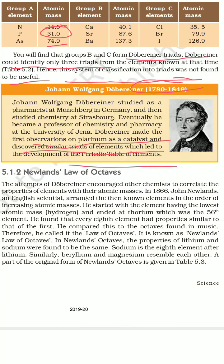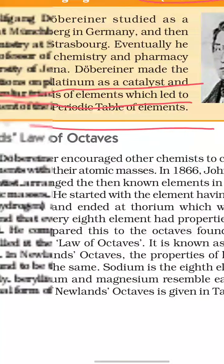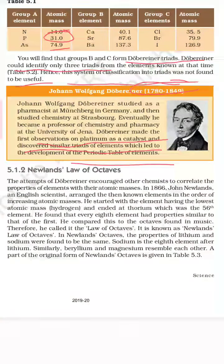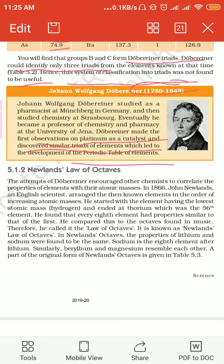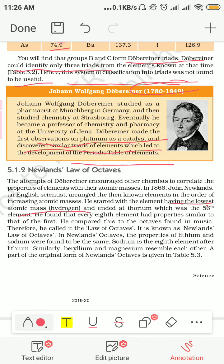Next scientist के बारे में हम पढ़ेंगे — वो हैं Newland. Newland ने एक law present किया और उसको नाम दिया 'Law of Octaves'. John Newland in 1866 arranged the elements according to increasing atomic masses. He started with the element hydrogen, which had the lowest atomic mass number, and ended the classification with thorium, which was the 56th element known at that time.